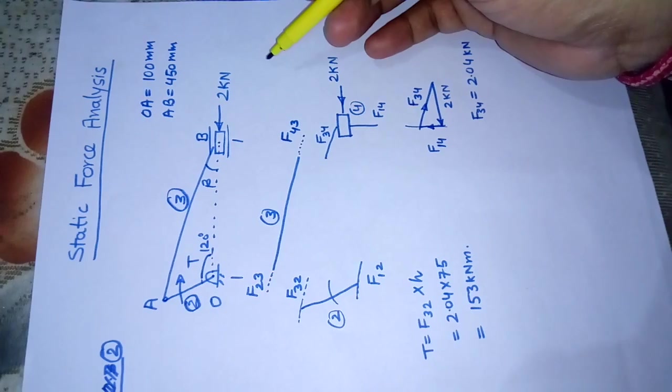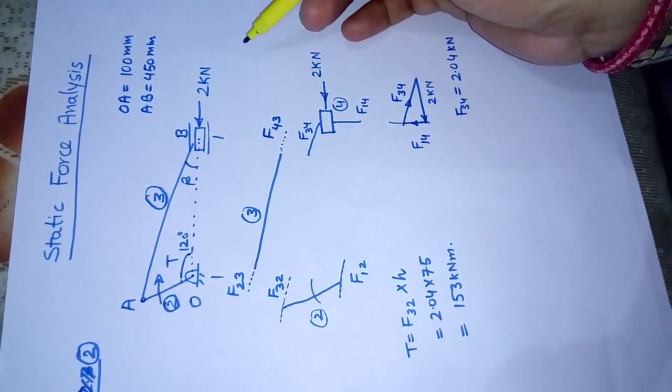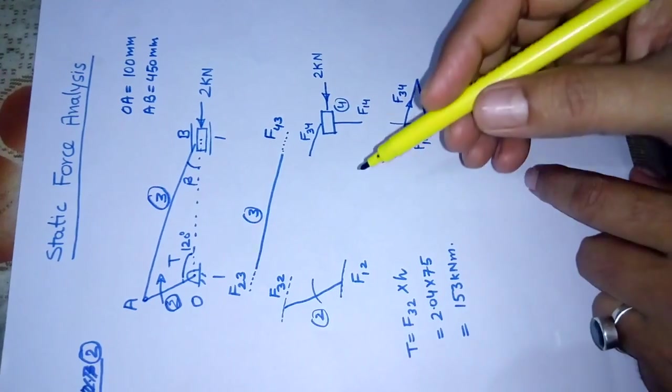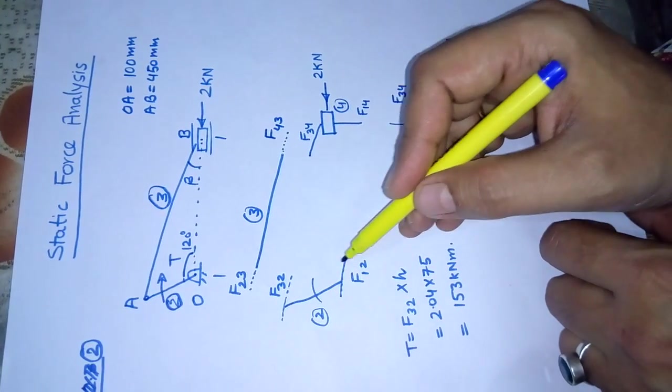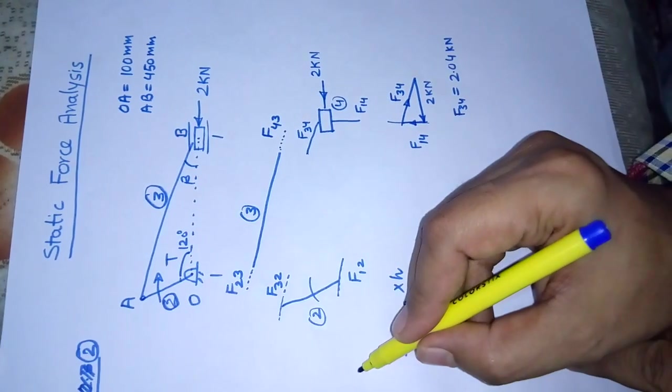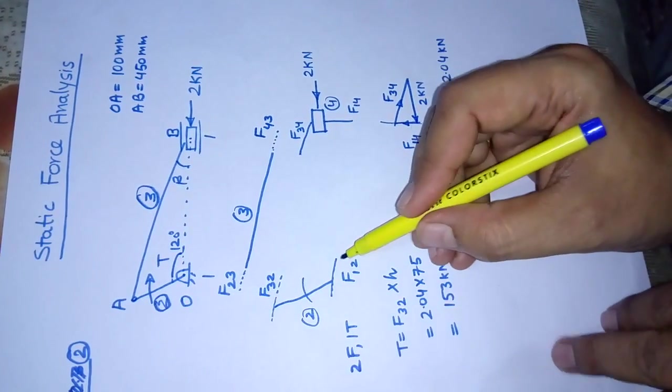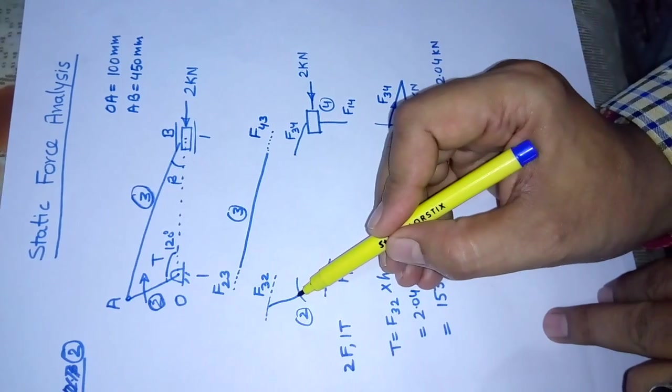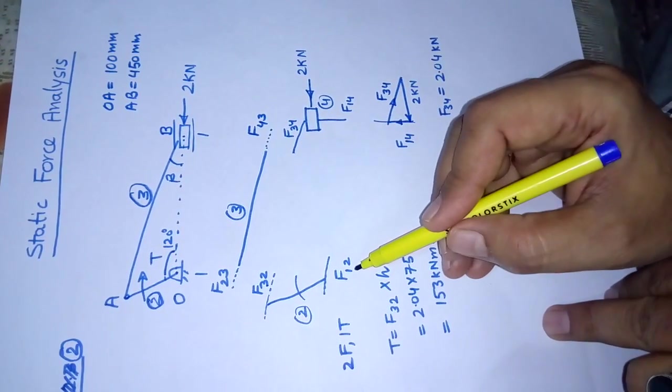As we started in the first problem, we need to identify what kind of force system exists in different links. We will start with link number 2. Link number 2 has two forces and one torque.